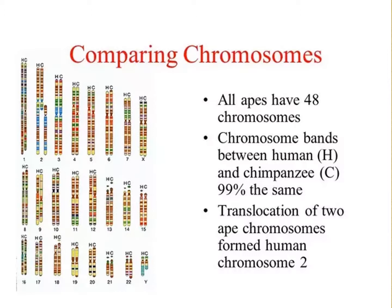It turns out that after more detailed genetic studies, humans and apes differ by about 6% of their genes — about 1,400 genes out of 22,000 genes are different between humans and apes.